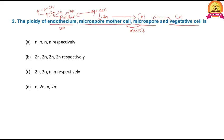Therefore, the ploidy of endothecium, microspore mother cell, microspore, and vegetative cell is 2N, 2N, N, and N respectively. Hence, the correct option is C.